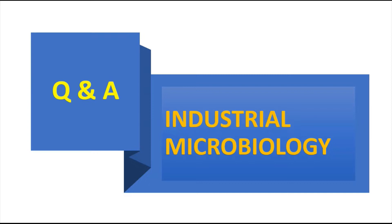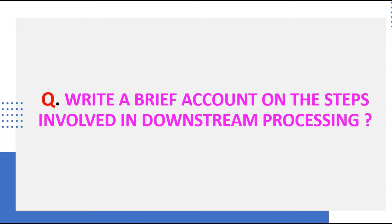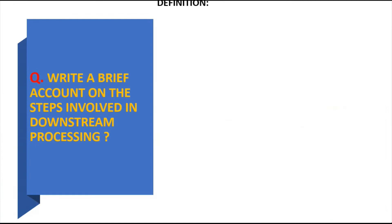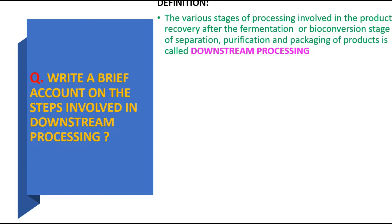In this video, from a series of questions and answers on industrial microbiology, we are going to discuss the question: write a brief account on the steps involved in downstream processing. Downstream processing can be defined as the various steps or stages involved in the recovery of the product after the fermentation or bio-conversion stage — including separation, purification, and packaging of products.